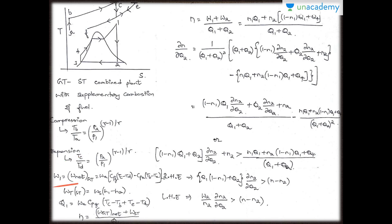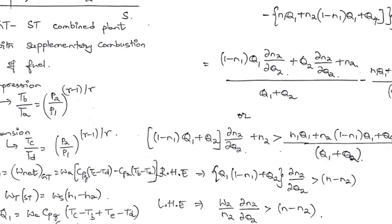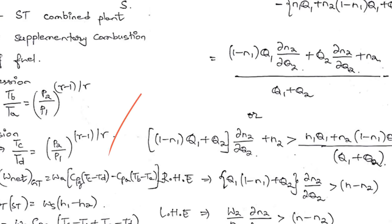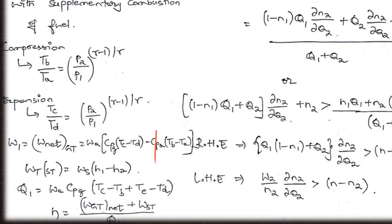The net work of the gas turbine, W1 or W_net, equals W_A into CPG into (TC minus TD) minus CPA into (TB minus TA). The turbine work of the steam turbine is W_S into (H1 minus H2). By the energy balance equation, Q1 equals W_A·CPG into (TC minus TB) plus (TE minus TD), which gives the efficiency ETA as (WGT_net plus WST) — that is, the work of the steam turbine and the net work of the gas turbine — divided by Q1.